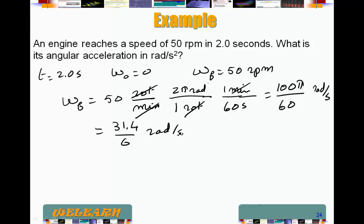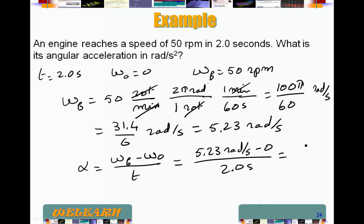And we can calculate that, express it in decimal terms if we want. 5.23 radians per second. Now to find my acceleration. Acceleration is just change in velocity over time. In this case, that's going to be 5.23 radians per second, minus 0 over 2 seconds, which is just 5.23 over 2, which is 2.6 radians per second squared. That's my answer.